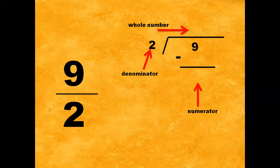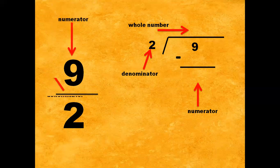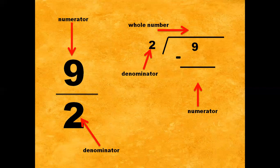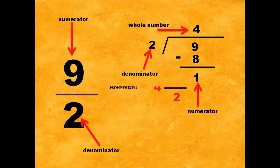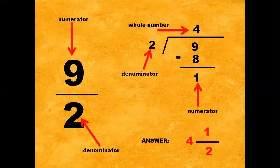Next: 9 halves. The numerator is 9 and the denominator is 2. Step 1: 9 divided by 2 gives us 4. 4 times 2 gives us 8. 9 minus 8 gives us 1. So the whole number is 4, the denominator is 2, and the new numerator is 1. The final answer is 4 and 1 half. Remember, if the numerator of a given fraction is 1, then the fraction itself is already in lowest term.